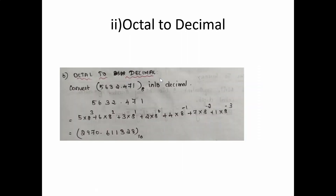For octal to decimal, the given is octal and we convert to decimal. With integer part 5632 and fractional part, the positions are units, tens, hundreds, and thousands. So: 5×8³ + 6×8² + 3×8¹ + 2×8⁰. Remember, anything to the power 0 is 1.